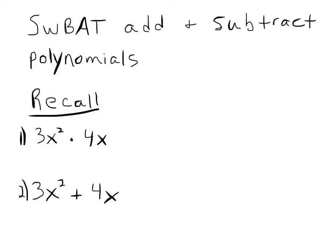For this first one, we're multiplying. Recall that the rules for multiplying: we don't care if they have the same variable raised to the same exponent — we can just multiply these. We would multiply the coefficients and add the exponents. So three times four is 12, and this is x to the first — don't forget that hidden one — so it would be 12x to the third power.